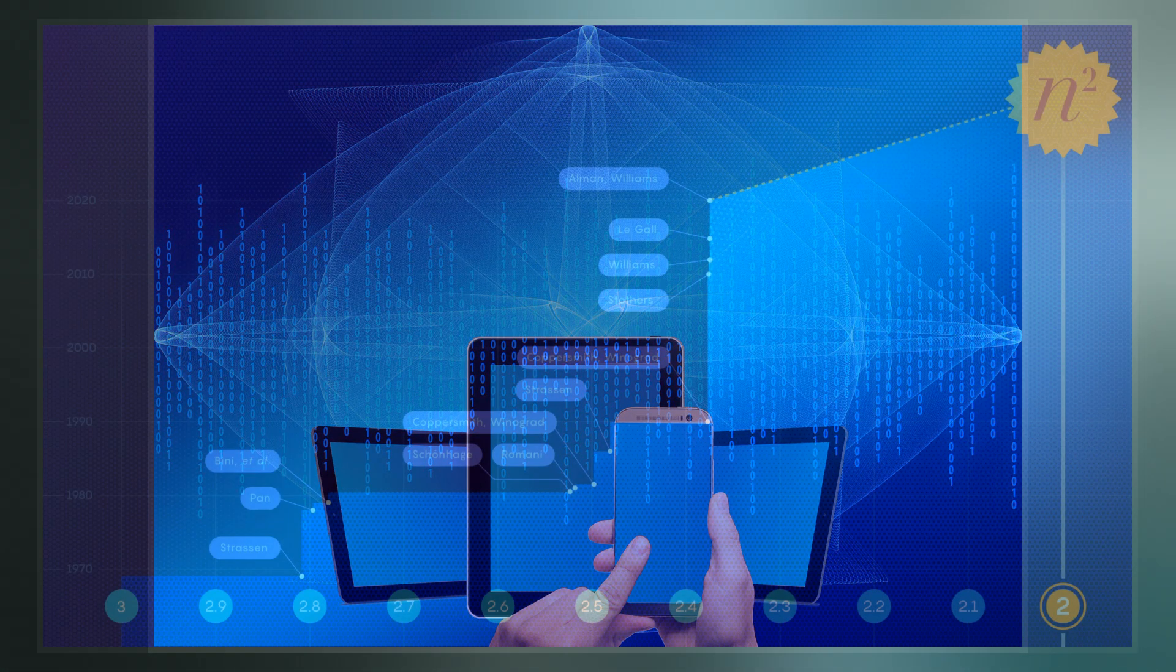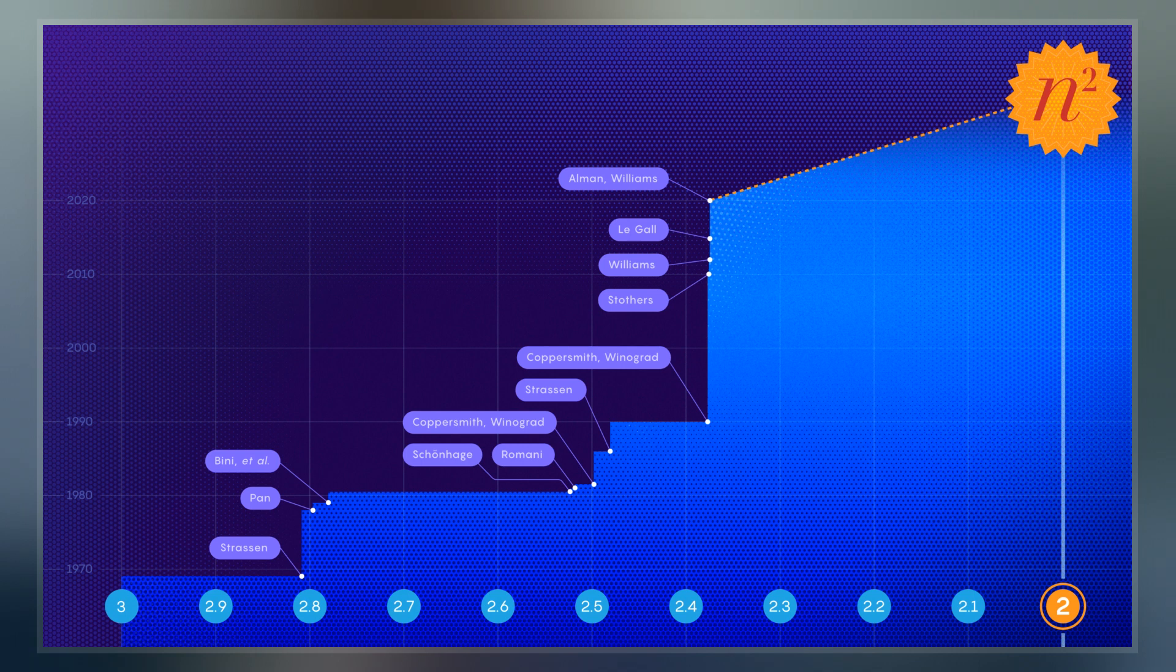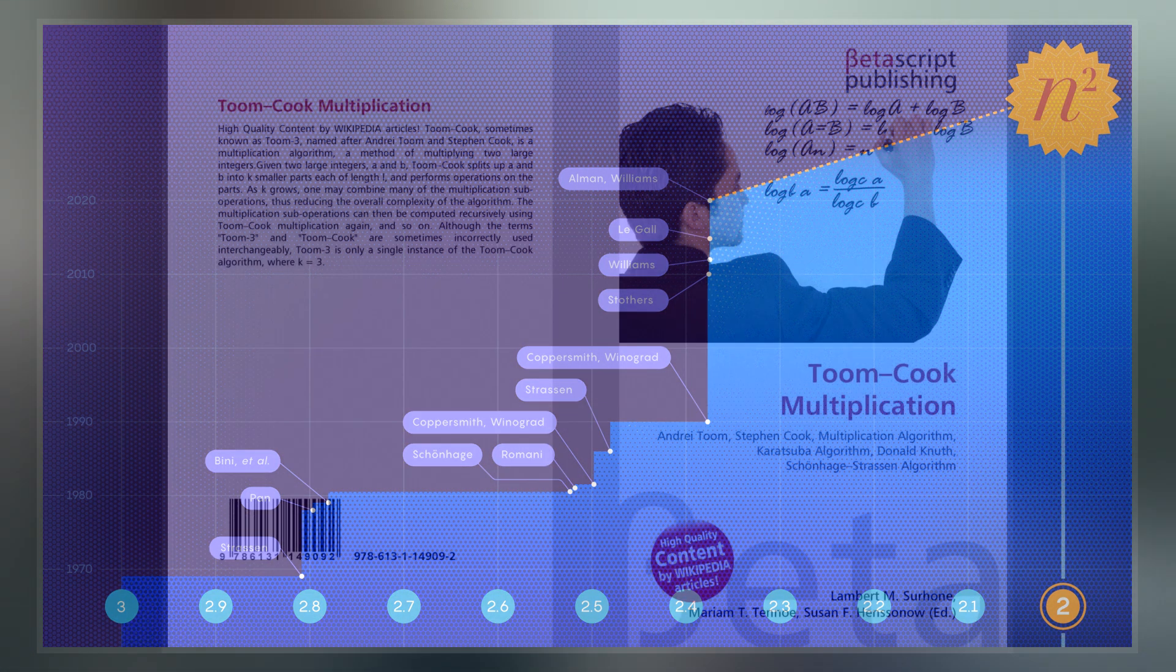The algorithm uses recursive fast Fourier transforms in rings with 2n plus 1 elements, a specific type of number theoretic transform.